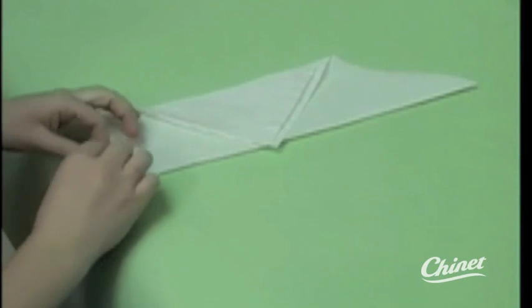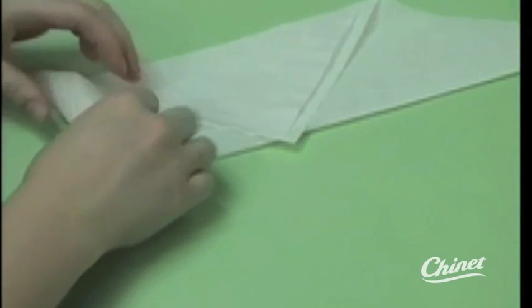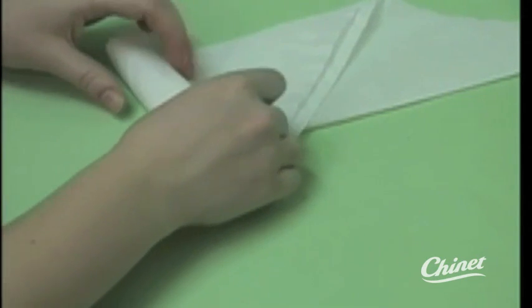Start on one side of the napkin and begin rolling a loose coil. As you roll, make sure that the napkin keeps an even shape.